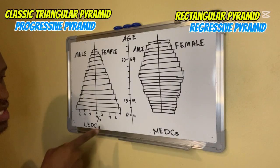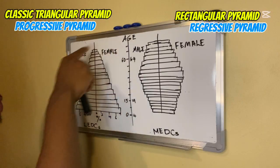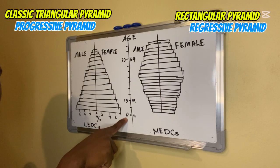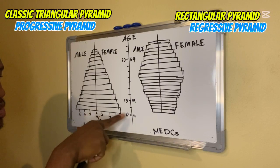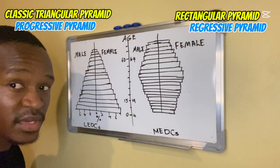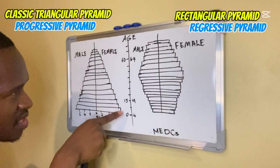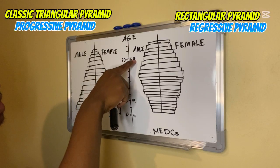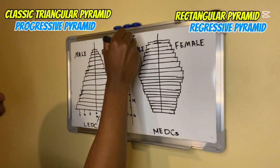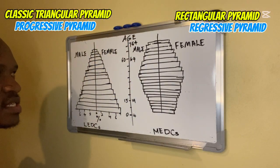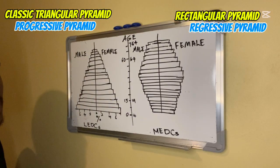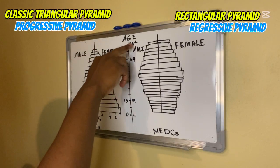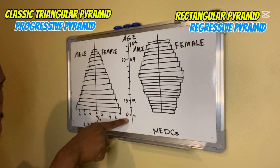Along the side there is a line showing us the age groups. At the bottom we have zero to four years — this is when people are born, so the base of the pyramid shows us the birth rate. At the top, from 60–64 years up to 75 years and above, this is where we get our death rate.